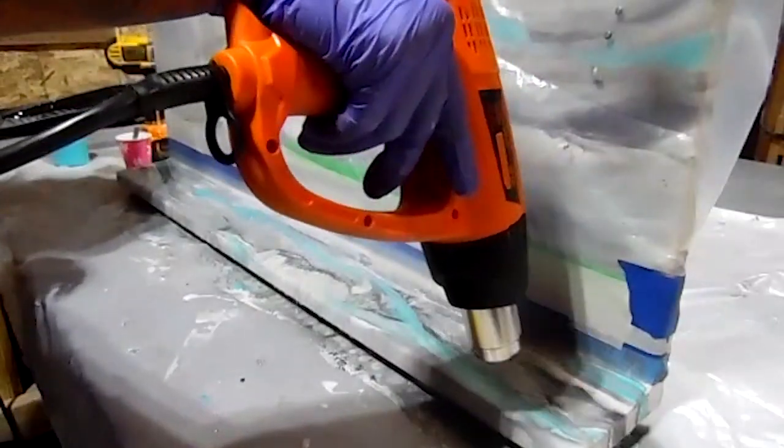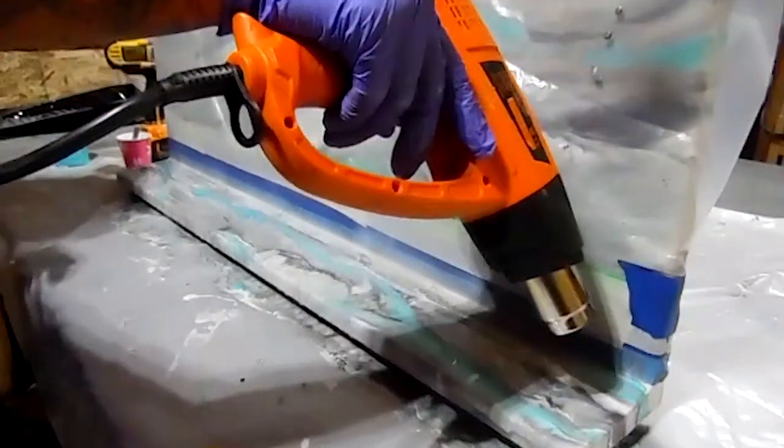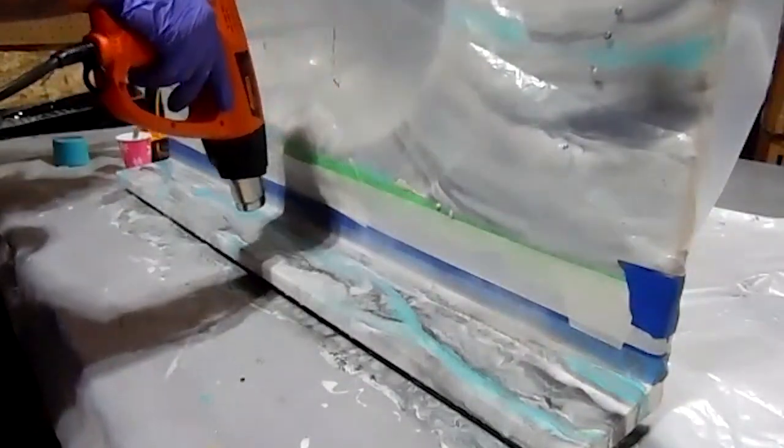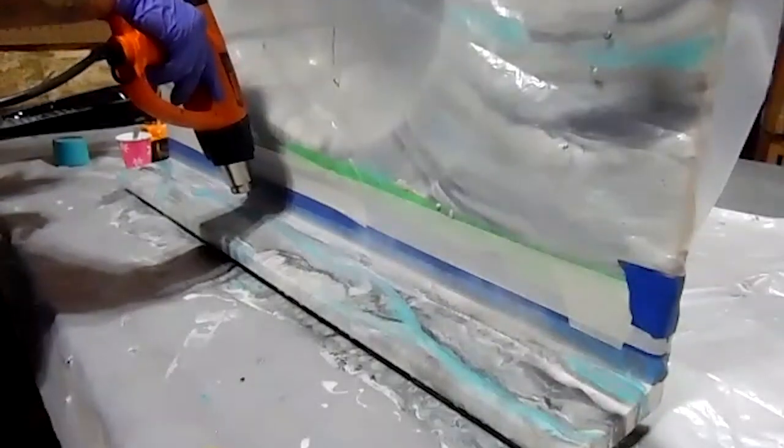So here I'm moving the blue around a little bit. I don't want to move it around too much. The more you put the heat gun to it, the more it's going to mix, and I want that to be a little bit vibrant. I want the blue to stick out like it did in the bowl.